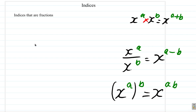In our last video, we looked at some results from the laws of indices. In those results, we used the second law, which is x to the a divided by x to the b is equal to x to the a minus b. Let us see some results from the third law now.